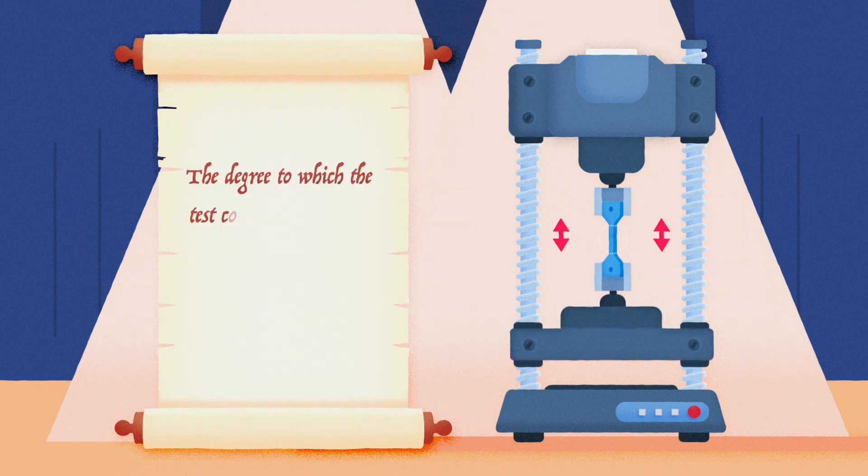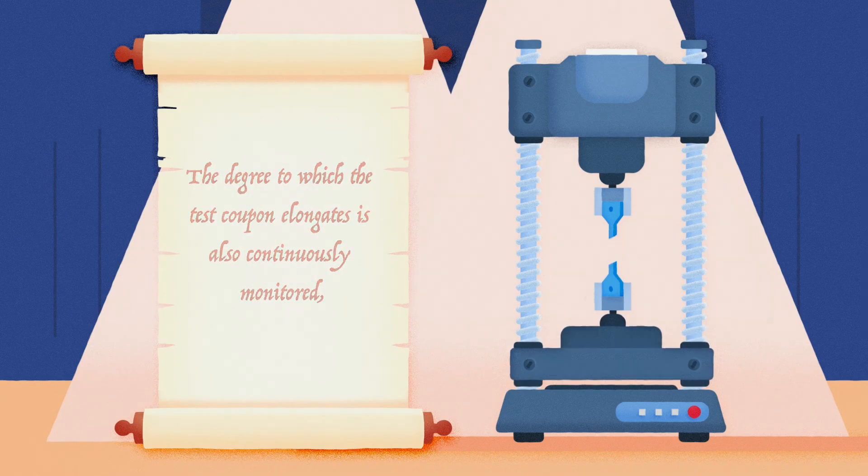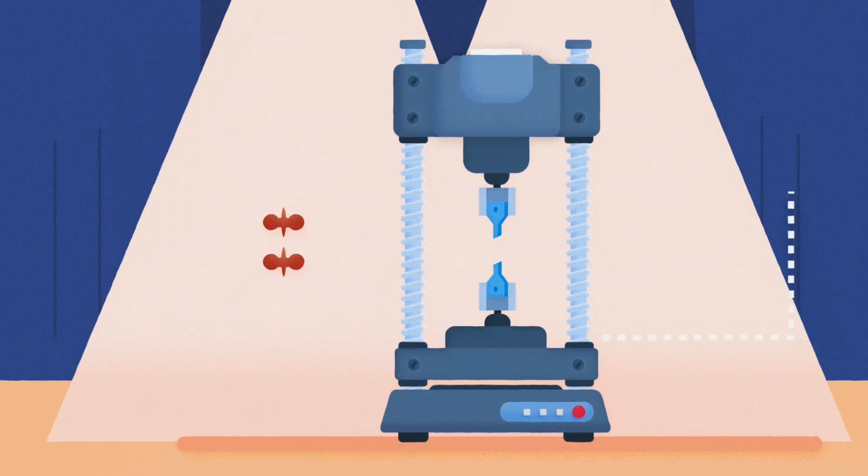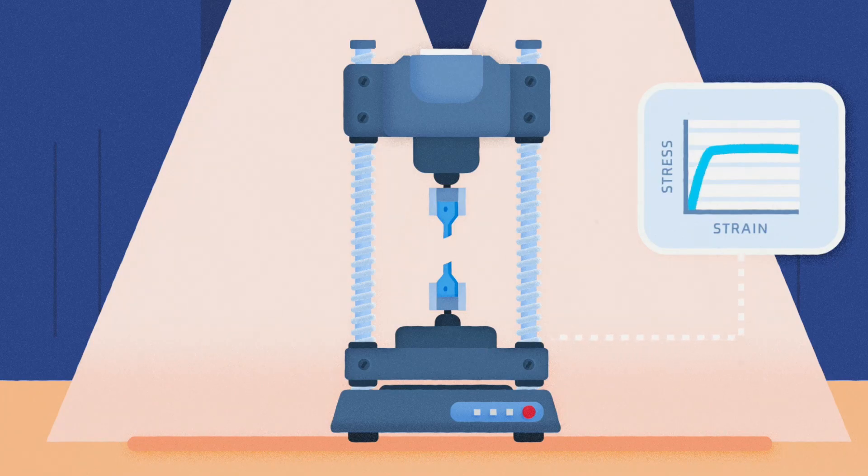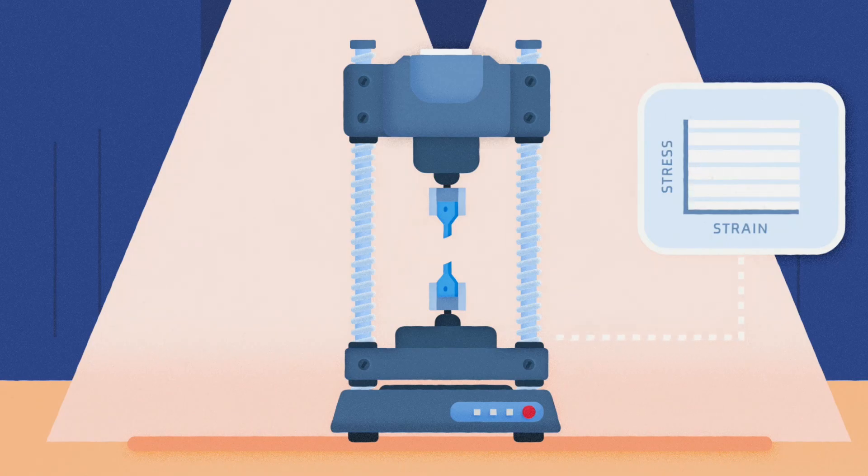The degree to which the test coupon elongates is also continuously monitored. And when the test finishes, the measured forces and displacements can be converted to stresses and strains, such that the stress-strain curve can be obtained and analyzed.